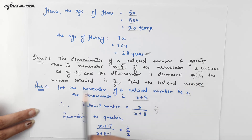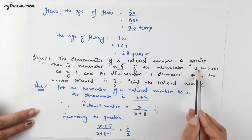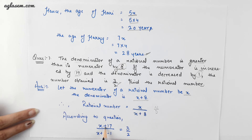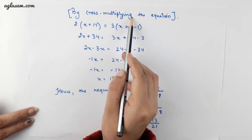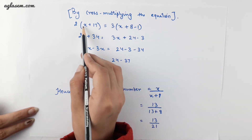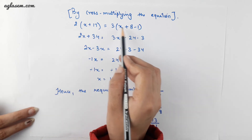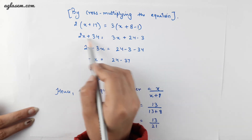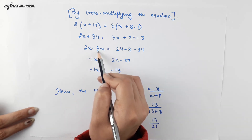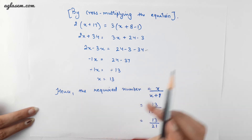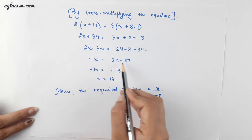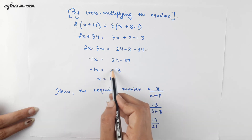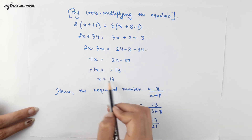According to the question, if the numerator is increased by 17 that is (x plus 17) and the denominator is decreased by 1 that is (x plus 8 minus 1), the result is 3 by 2. By cross multiplication: 2 into (x plus 17) gives 3 into (x plus 8 minus 1). Solving the equation and making all the variable terms on one side and constant terms on the other, we get minus x is equal to 24 minus 37. Cancelling the negative sign on both sides gives x is equal to 13.